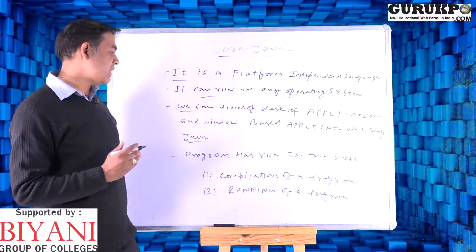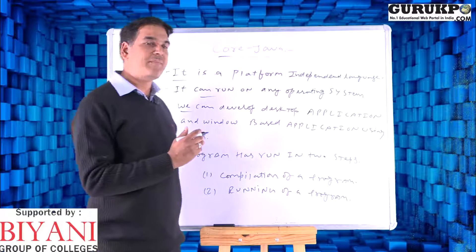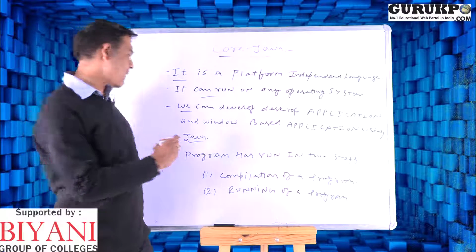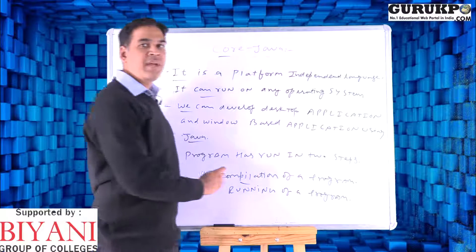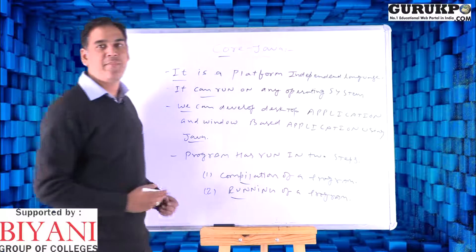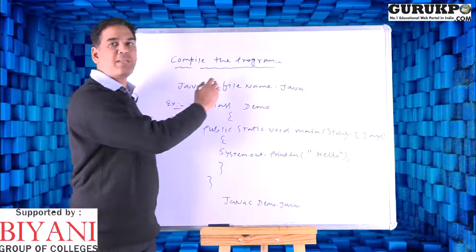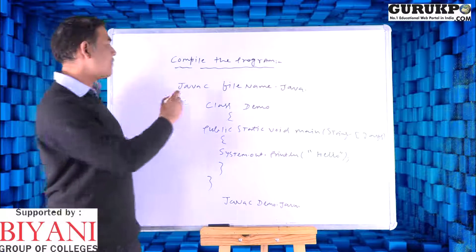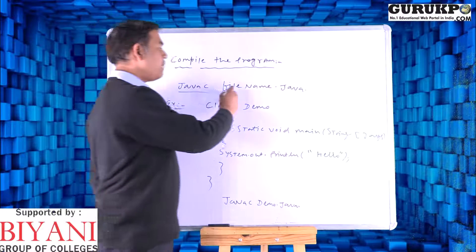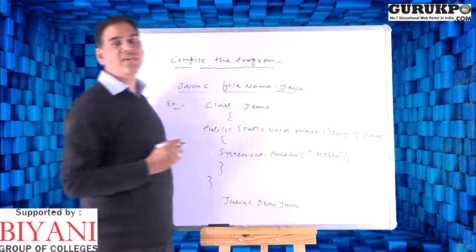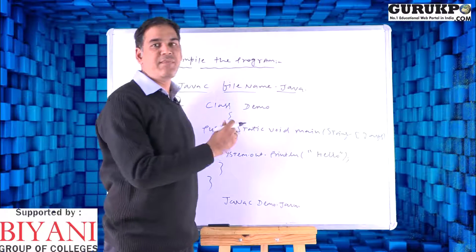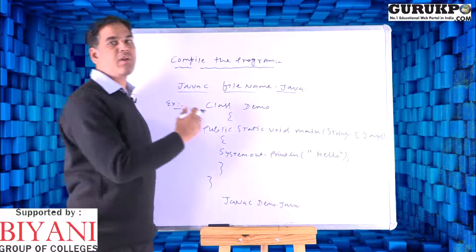Basically, a Java program runs in two steps. First, we compile the program, and in the second step we run the program. For compiling the program, we have to write the command javac, then the file name with the .java extension. The .java extension is used when we save any Java file to a particular location.